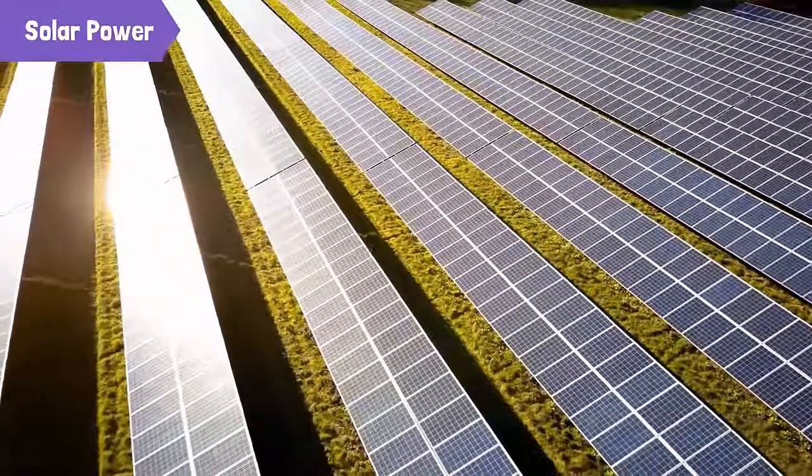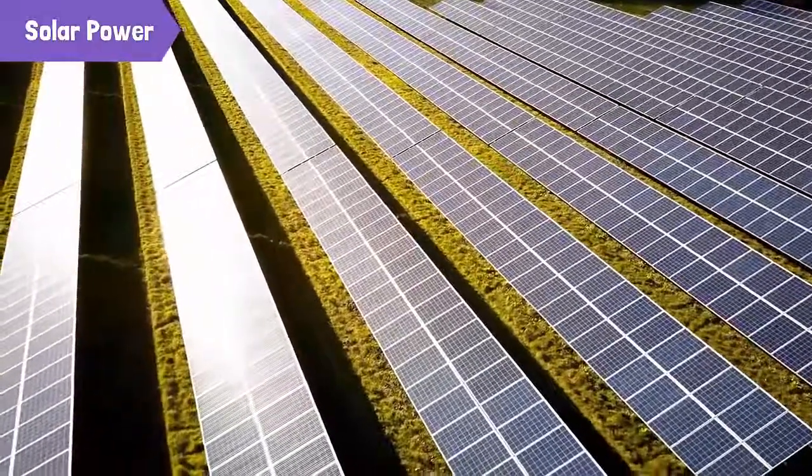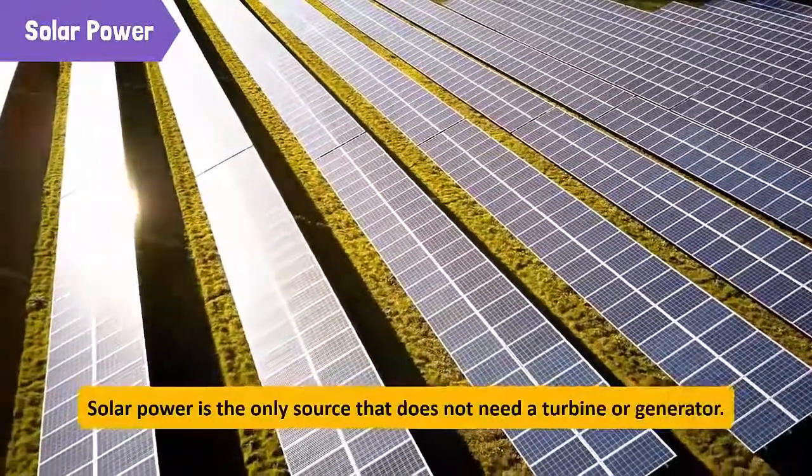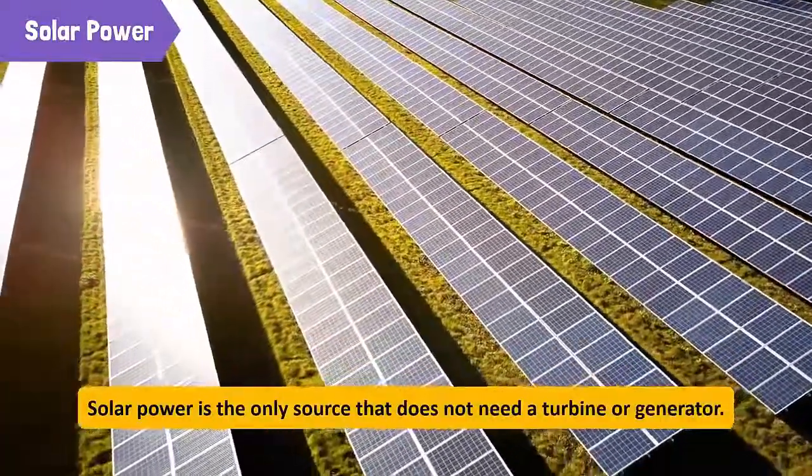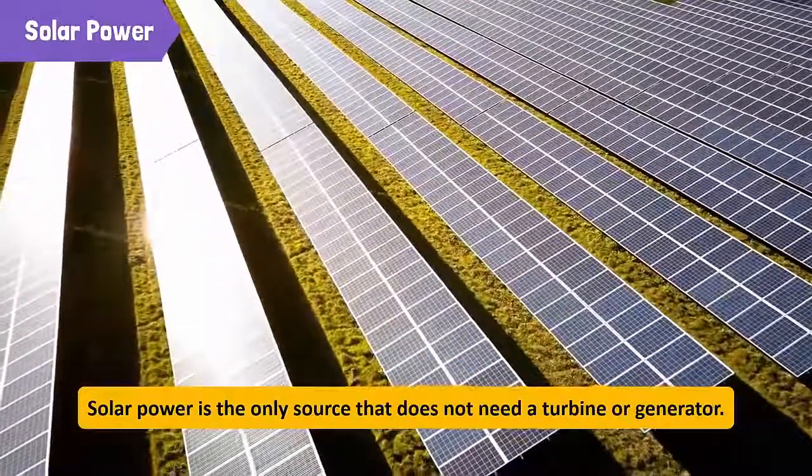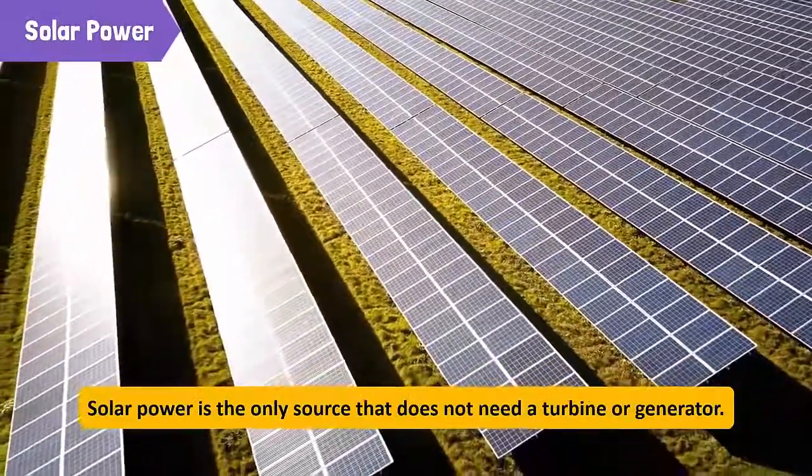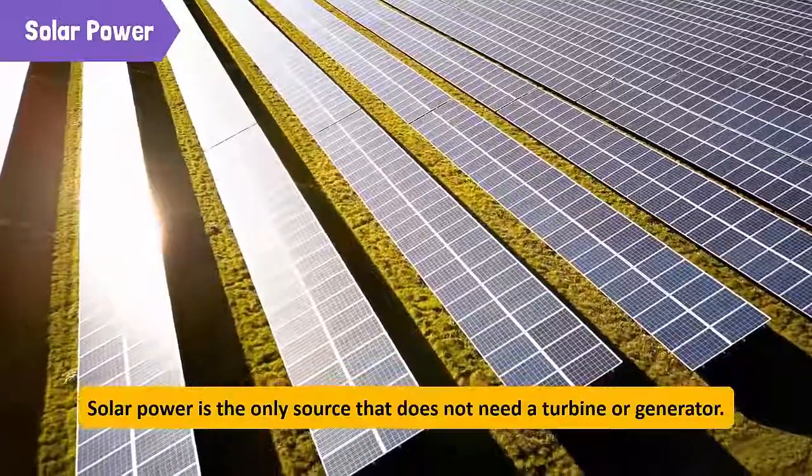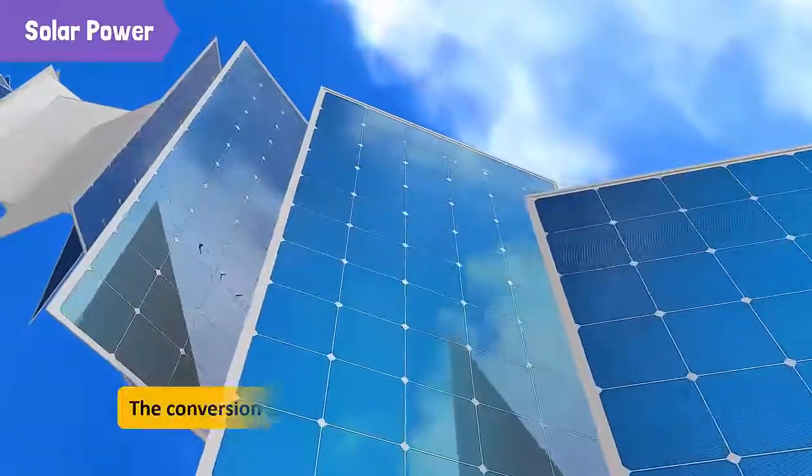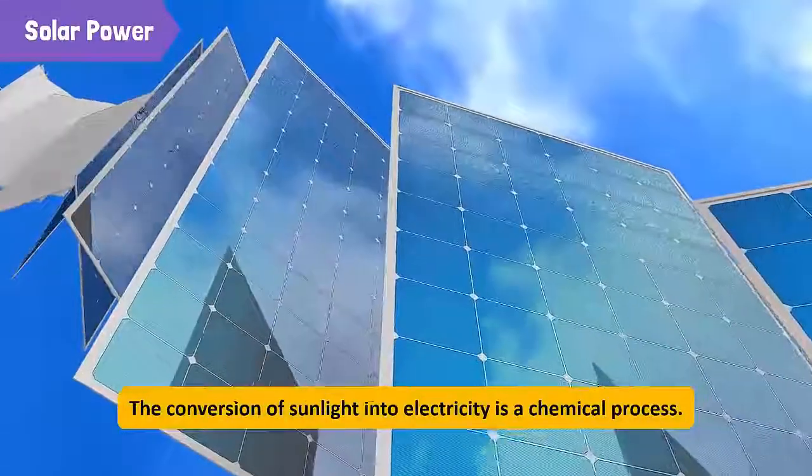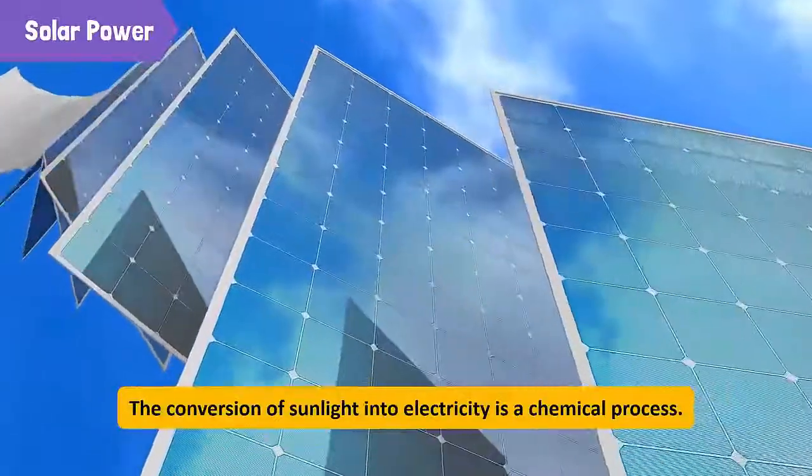Solar panels absorb energy from sunlight and convert it into electricity. Compared to the other sources of electricity, solar power is the only one that does not need a turbine or generator. Conversion of sunlight into electricity is a chemical process.